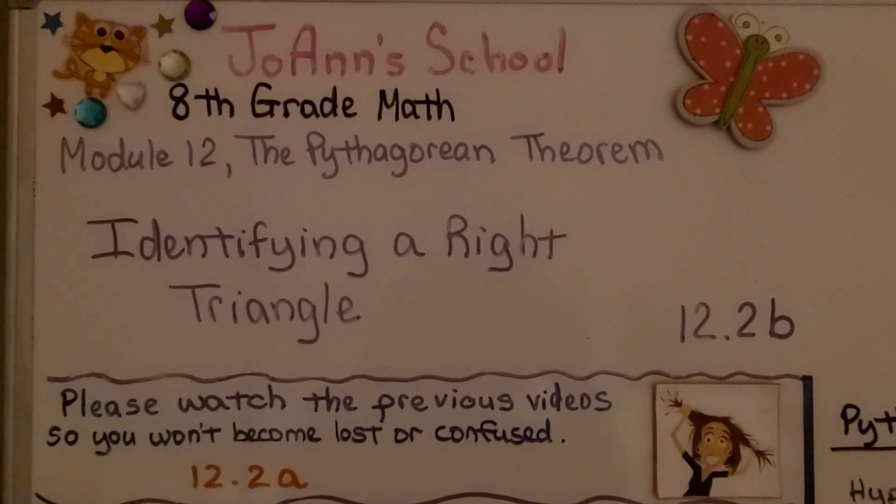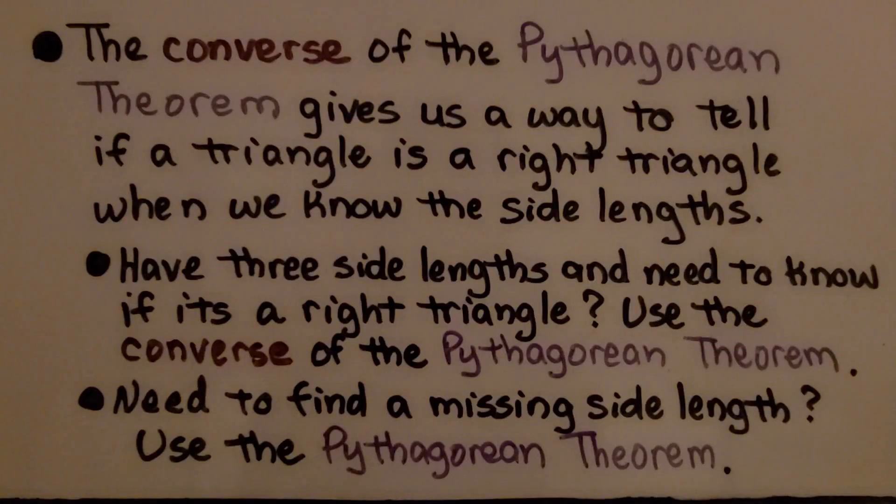Lesson 12.2b, identifying a right triangle. The converse of the Pythagorean theorem gives us a way to tell if a triangle is a right triangle when we know the side lengths.